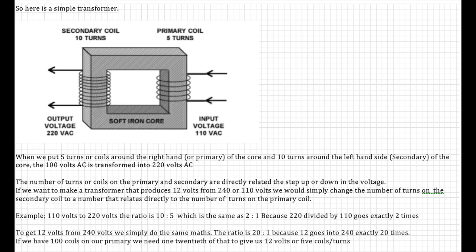So here's an illustration of a simple transformer. This transformer we would call a step-up transformer because it's stepping the voltage up. So how does it step up the voltage? When we put five turns or coils around the right hand or primary of the core and 10 turns around the left hand side, the secondary of the core, these two coils change the voltage from 100 volts AC to 220 volts AC. And this process is done by electromagnetic induction.